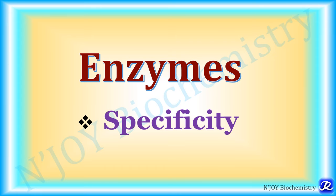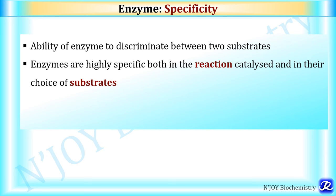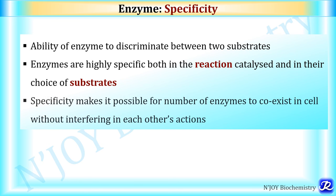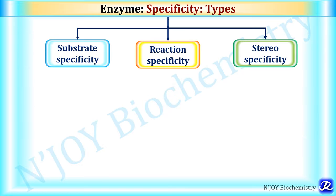Now let us see what is the specificity of enzymes. Enzyme specificity is the ability of an enzyme to discriminate between two substrates. Enzymes are highly specific both in the reaction catalyzed and their choice of substrates, and specificity makes it possible for a number of enzymes to coexist in a cell without interfering with each other's action. There are three types of enzyme specificity: substrate specificity, reaction specificity, and stereospecificity.